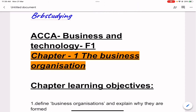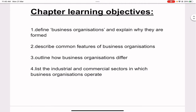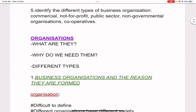Hello everybody. In today's video we will be learning the F1 chapter: The Business Organization for the Business and Technology paper. This is a very easy chapter and we will finish it within a few minutes. These notes have been made with reference to the Kaplan study text. In the following videos we will be solving the test kit as well. The chapter learning objectives are: define business organizations and explain why they are formed, and describe common features of business organizations.